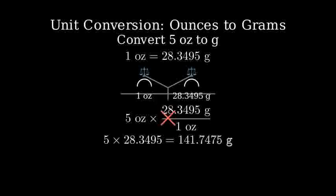5 times 28.3495 equals 141.7475 grams. Since we started with just one significant figure in our initial value of 5 ounces, we should round our answer to 142 grams.